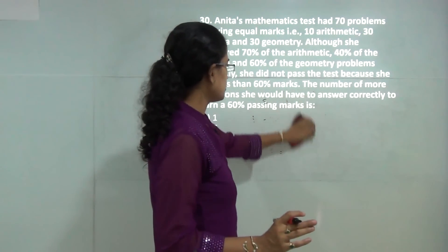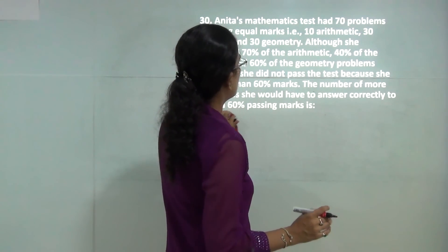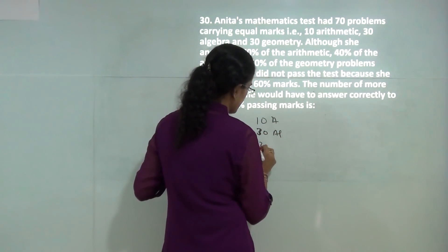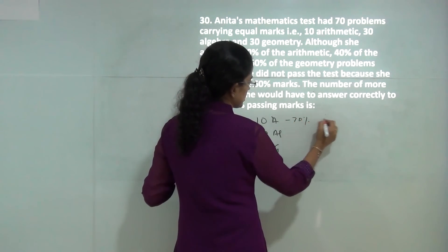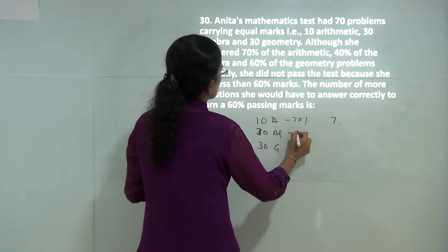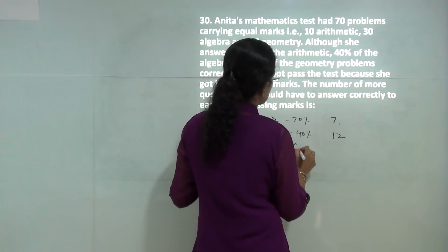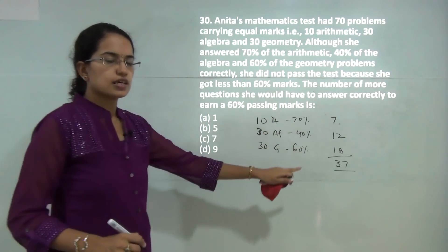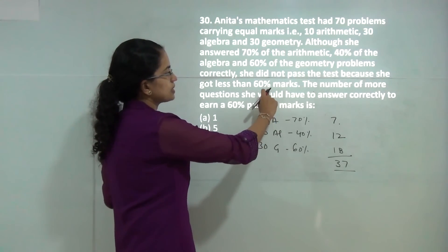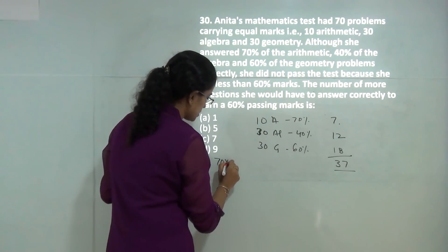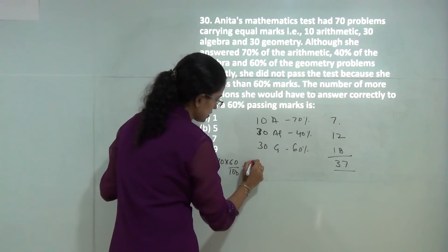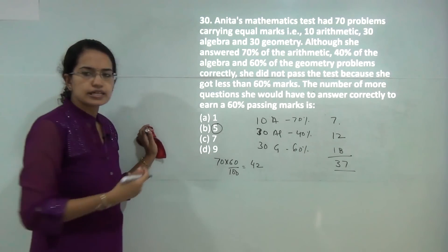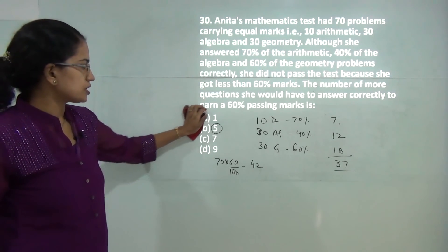The next question has 10 questions from arithmetic, 30 from algebra, and 30 from geometry. You do 70 percent correct in arithmetic giving 7 correct, 40 percent correct in algebra giving 12 correct, and 60 percent correct in geometry giving 18 correct. Total correct questions are 37. The minimum pass mark is 60 percent of 70 questions, which is 42. So you need 42 minus 37, that is 5 more questions correct to score 60 percent.